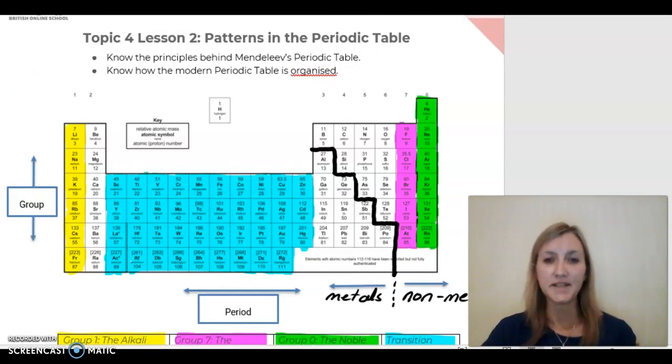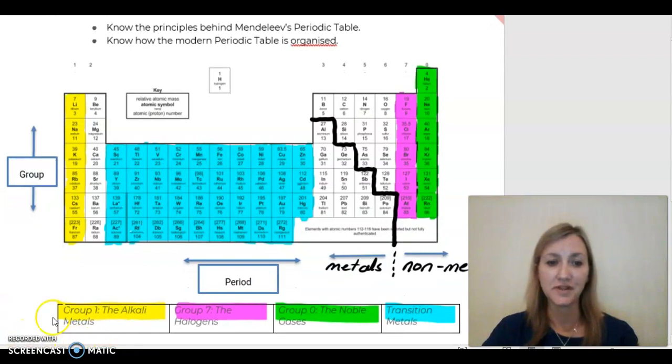So now that you've completed the task, let's have a look and compare this to your finished Periodic Tables. As you can see in the diagram here, I've chosen yellow for Group 1 and written in the name the Alkali Metals, and they're found in the first vertical column on the left of the Periodic Table.